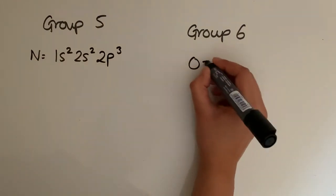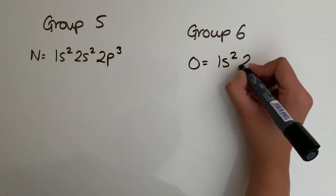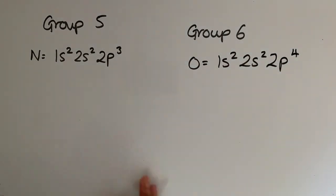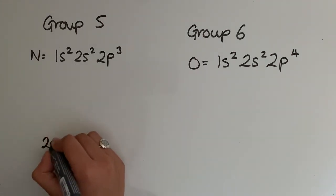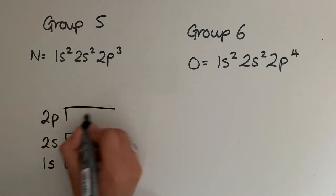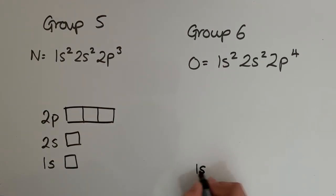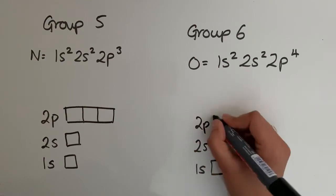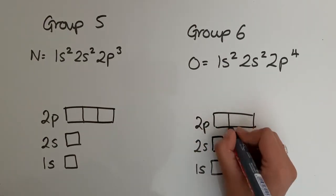Oxygen has 8 electrons, so that's 1s² 2s² 2p⁴. And again, I'm going to do this in the electrons in boxes model. So for nitrogen we have 1s, we have 2s and we have 2p. Same thing for oxygen.